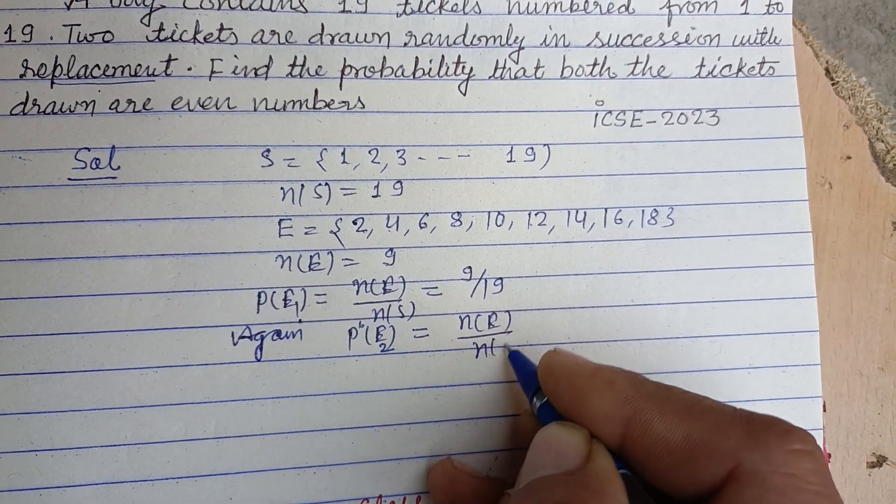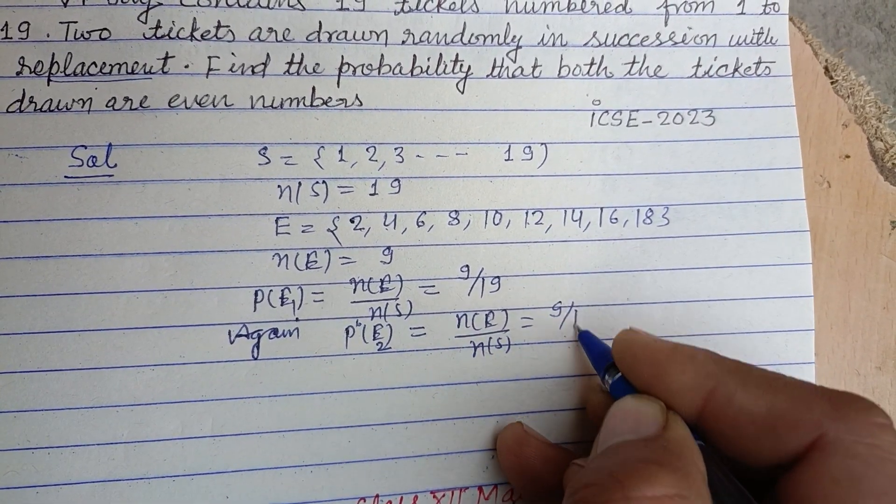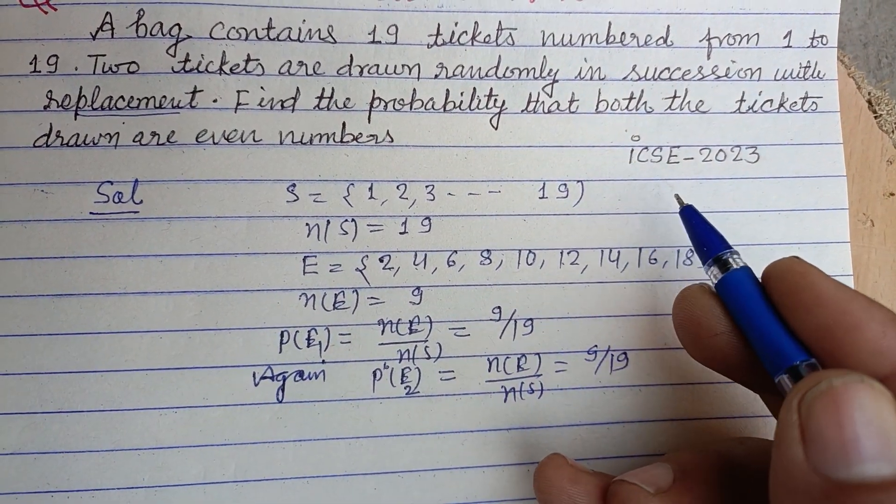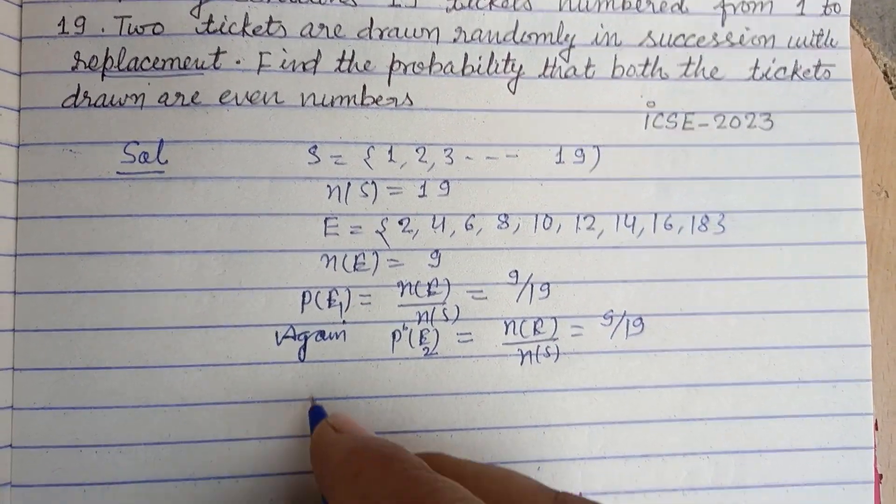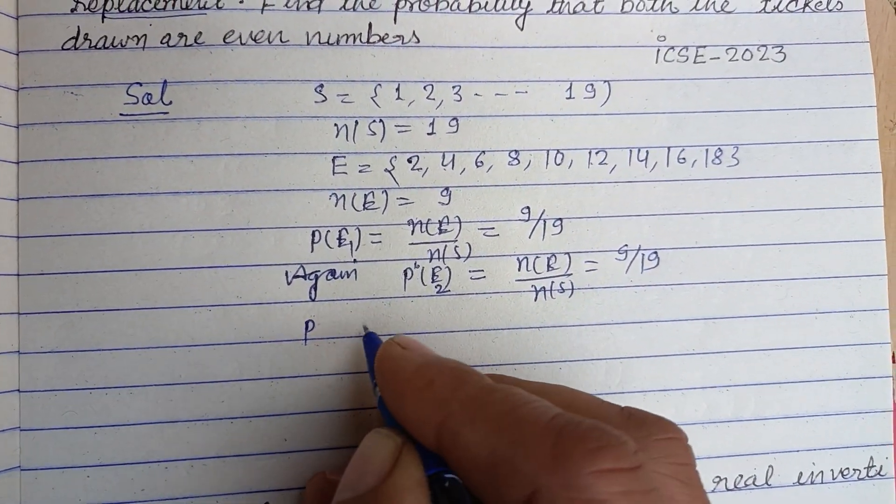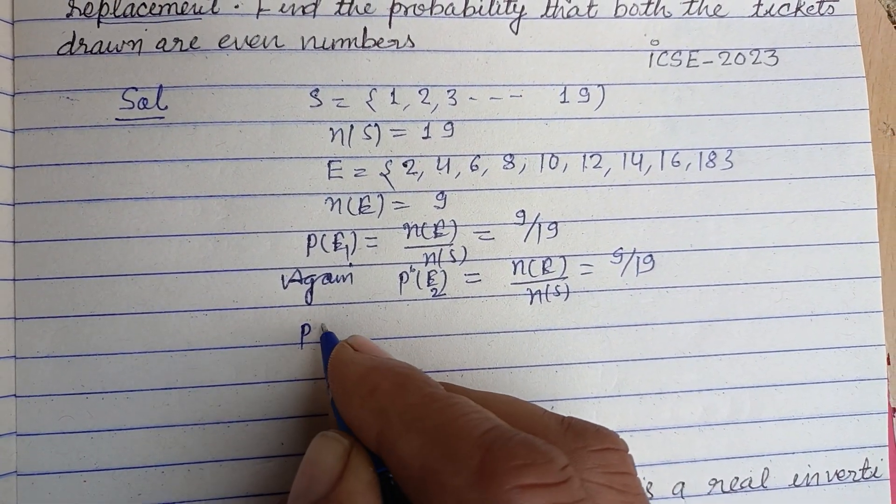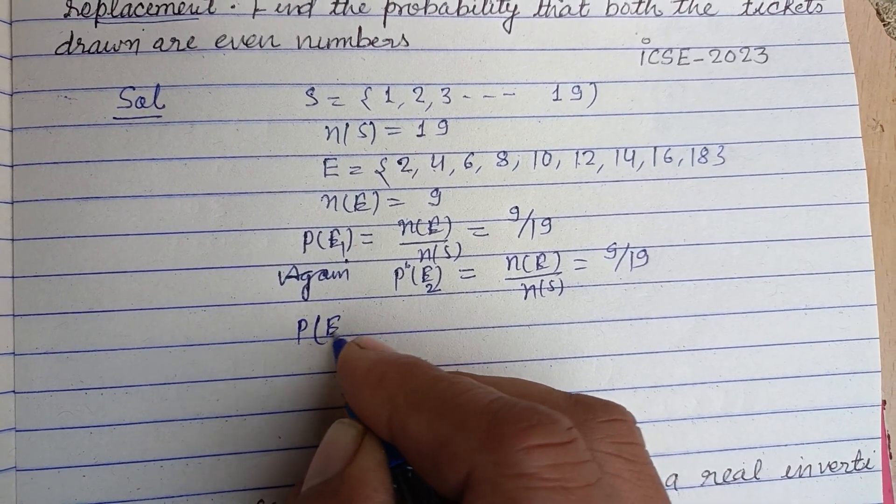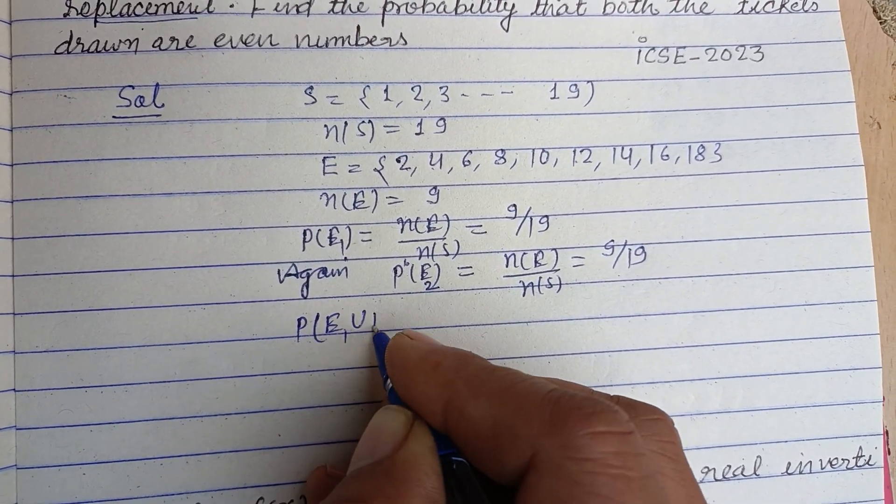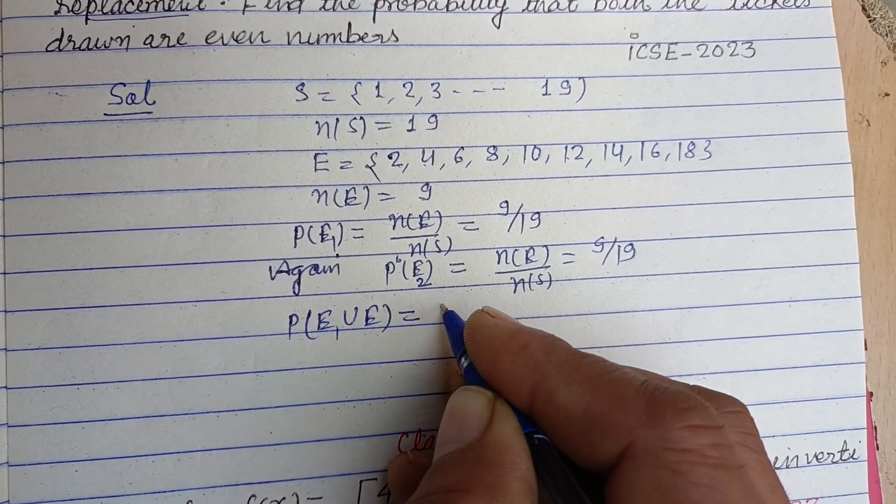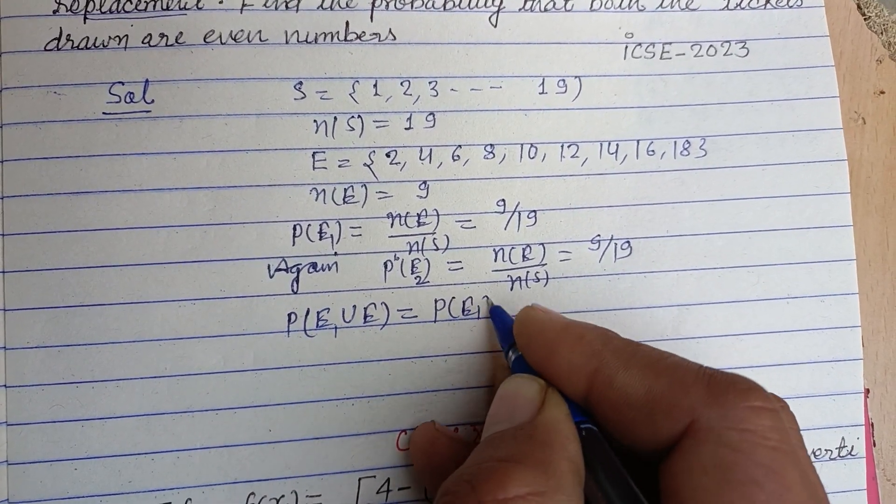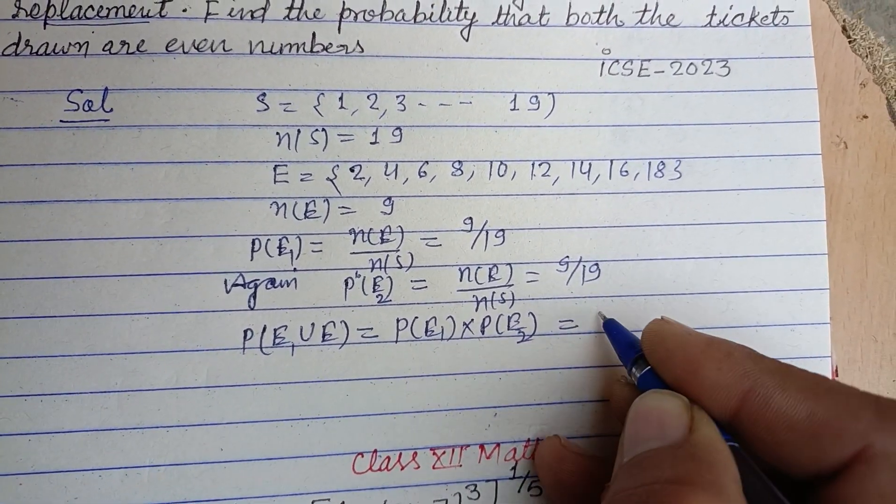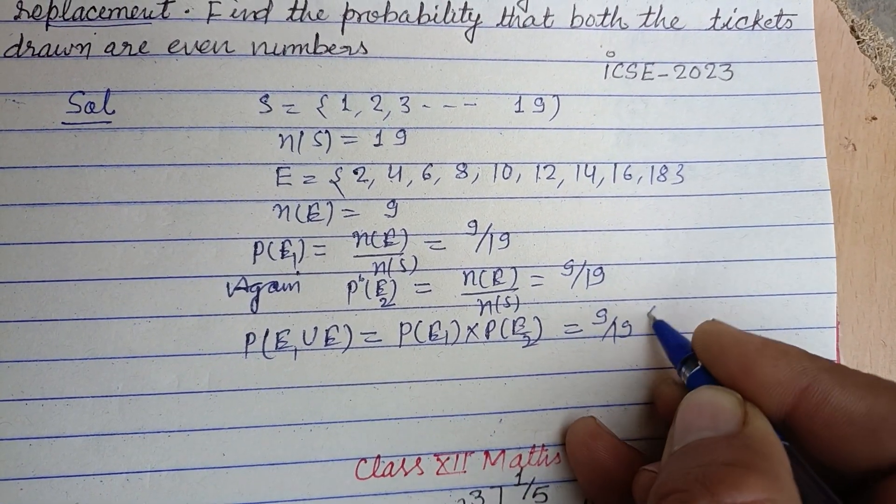Now the probability that both tickets drawn are even numbers - these are independent events. Therefore P(E1 ∩ E2) equals P(E1) times P(E2), because these are independent events. Therefore 9/19 times 9/19.